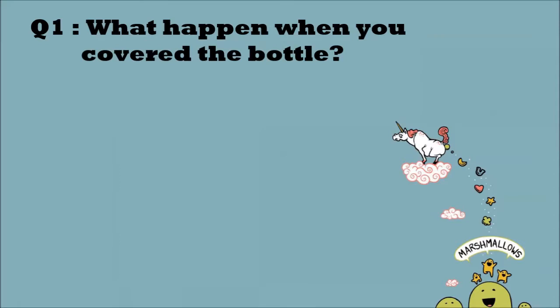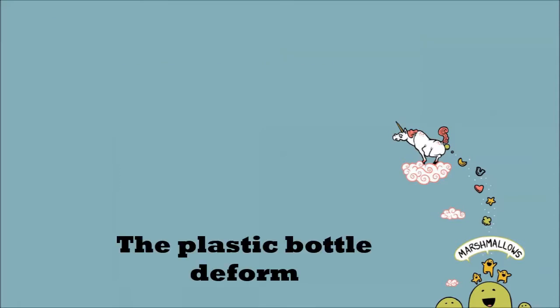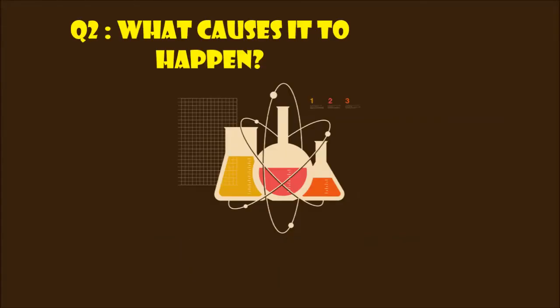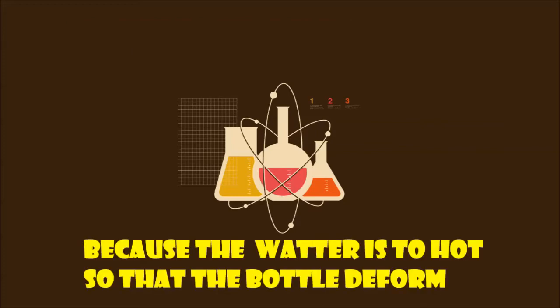Question number 1, for Procedure A: What happened when you covered the bottle? Our answer: The plastic bottle deformed. Question number 2, for Procedure A: What caused it to happen? Our answer: Because the water is too hot, so the bottle deformed.